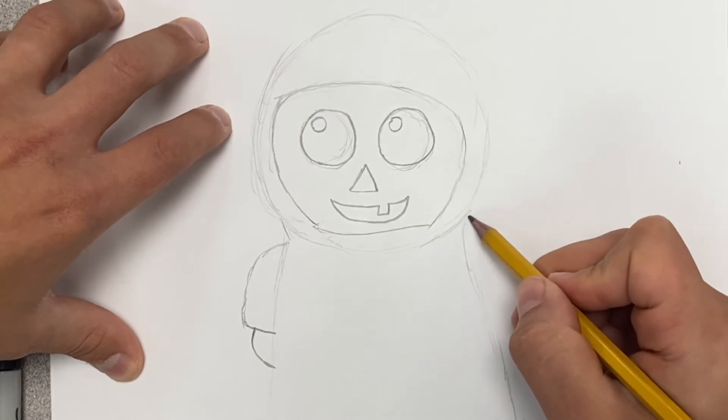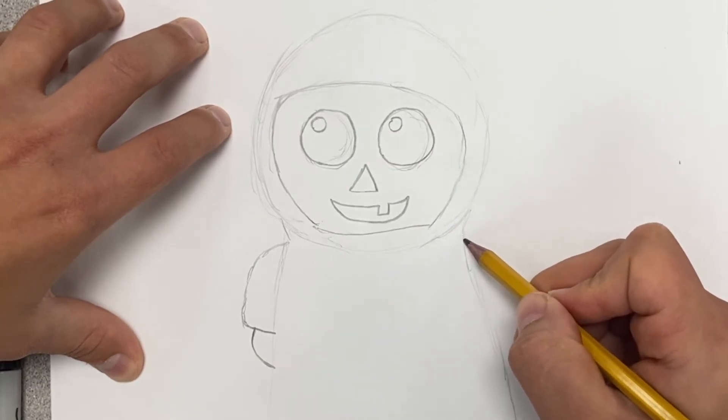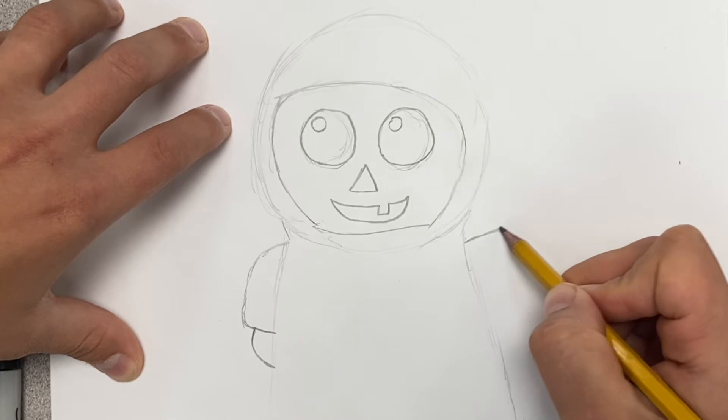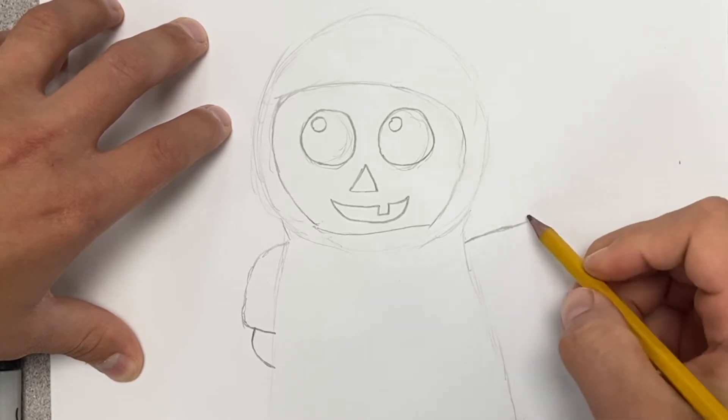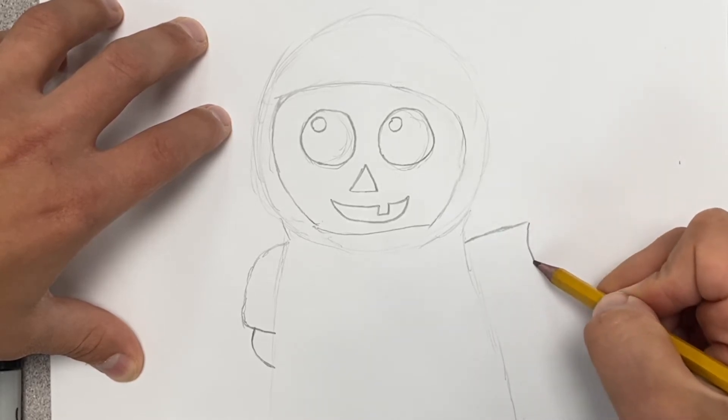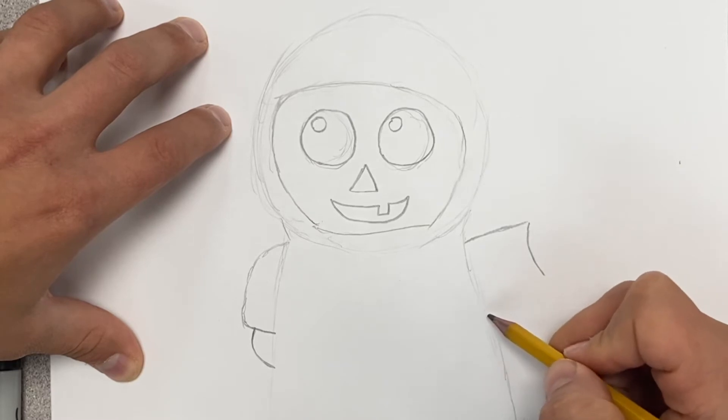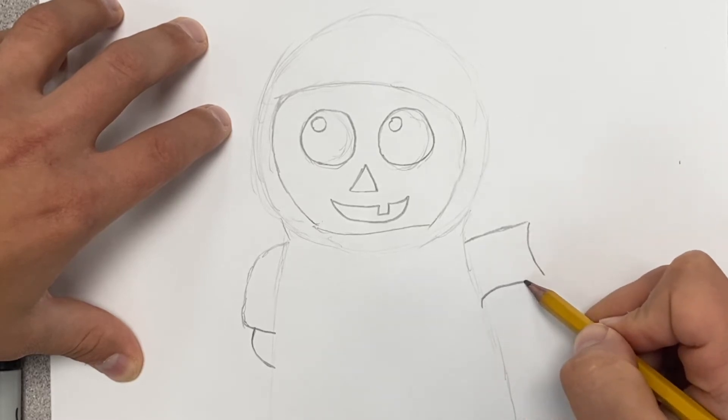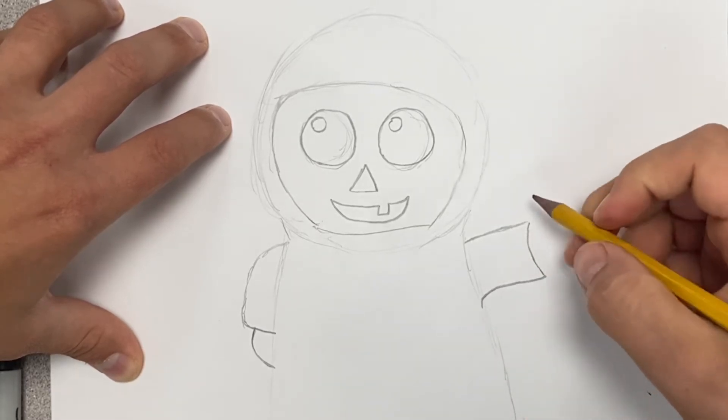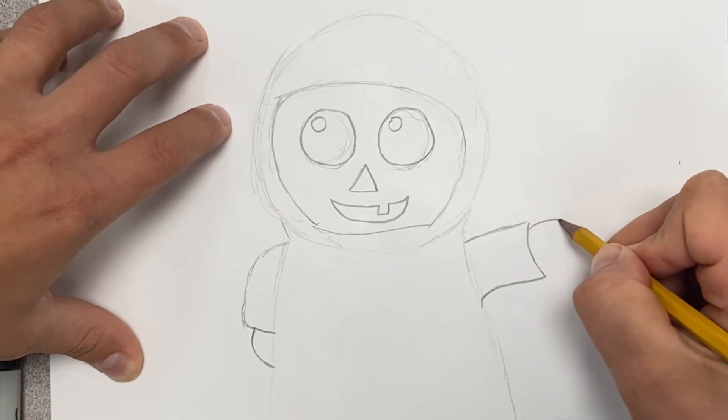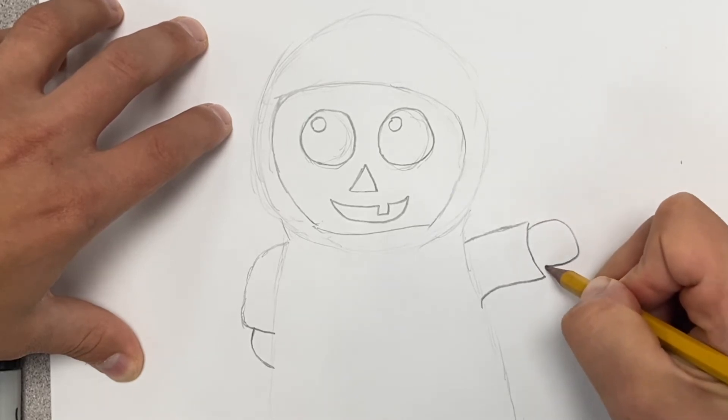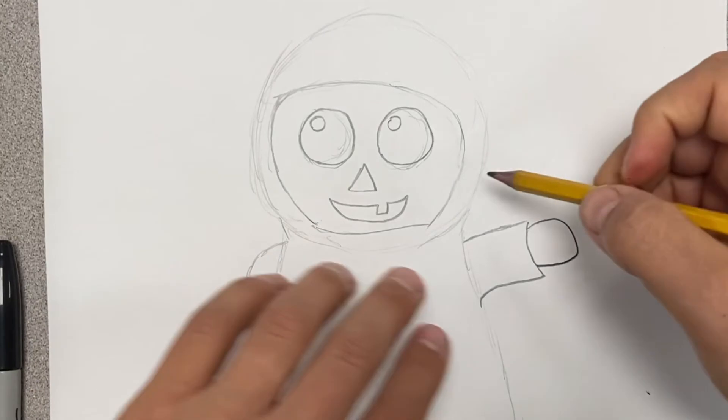And then on the opposite side where that kind of comes down, again this will kind of jet out. And then give it a little bit of a curve. This one can kind of come up and meet over there to that curve.